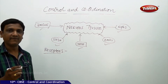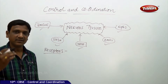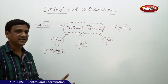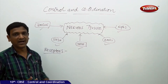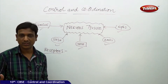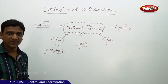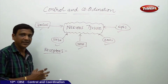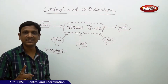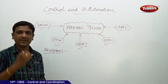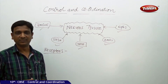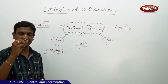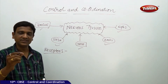A single receptor cannot identify all kinds of changes. So we have different kinds of receptors to identify different changes in the environment. If the change is of light or color, the receptor in the eyes recognizes that. If the change is of sound, the receptor in the ear identifies that. If it is a change in smell, the receptor in the nose identifies it. If it is a change in pressure or temperature, the receptors in the skin identify pressure, pain, and temperature — either hot or cold. The tongue consists of special receptors to identify each distinct taste.